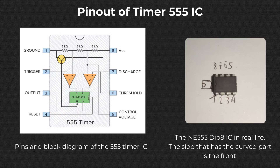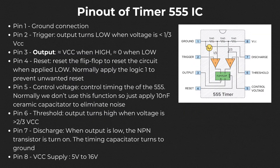Now coming back to our topic of the 555 timer, we will examine the pinout of this IC first. The left side is the block diagram and pin map of the 555 IC, and the right side is an actual image of the NE555 IC, which belongs to the 555 IC family. Pin 1 and 8 are for ground and power supply, respectively. Pin 2 and 6 are responsible for changing the output — they are connected to two comparators. Pin 2 is the inverting input, whereas pin 6 is the non-inverting input of the comparator. The output of the IC lies at pin 3.